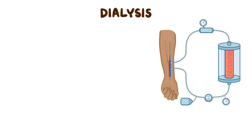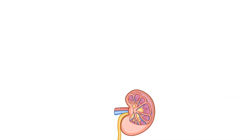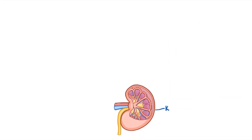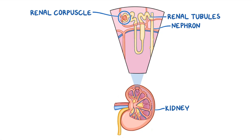There are two types of dialysis: hemodialysis and peritoneal dialysis. Now let's review some renal physiology. Each kidney is made up of millions of tiny functional units called nephrons, each of which consist of a renal corpuscle and the renal tubules.